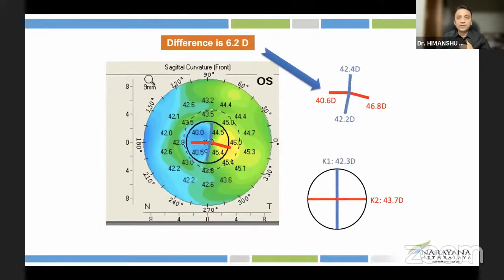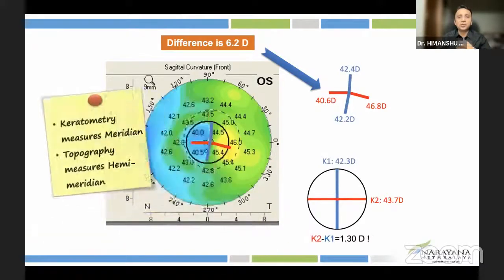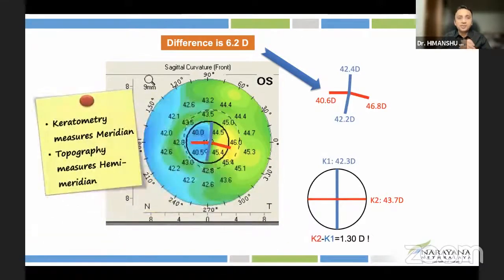Unfortunately, the SIM-K values of K2 and K1 would take the average. And the difference between the two would be what keratometry reports as astigmatism. Remember, keratometry talks the language of meridians, whereas topography talks the language of hemimeridians.